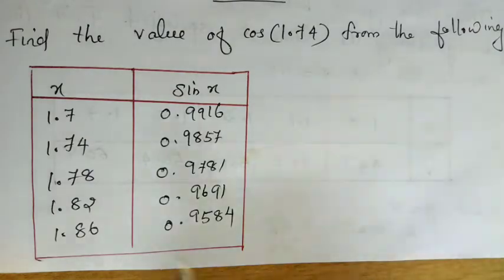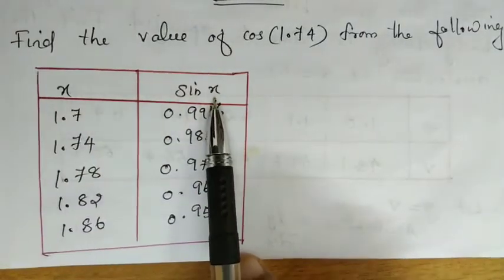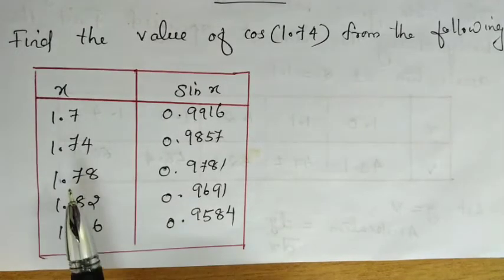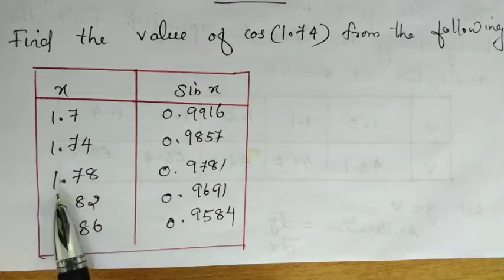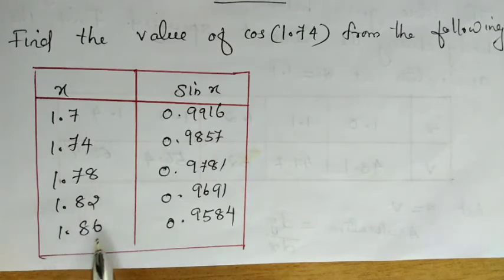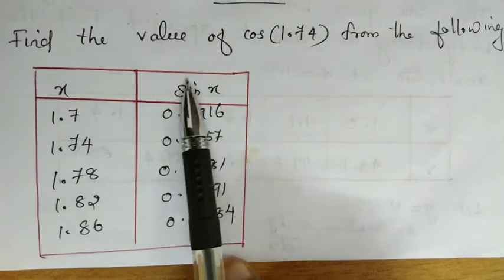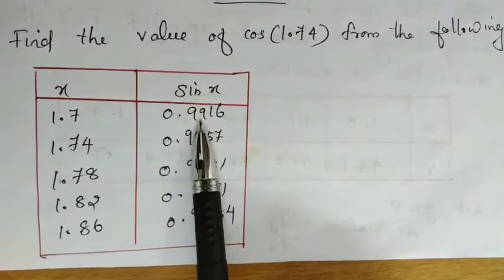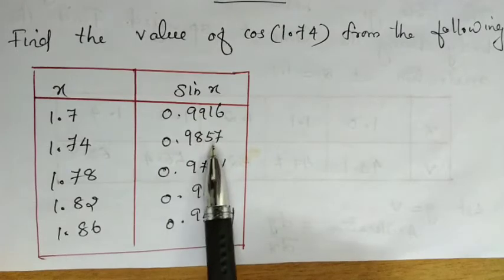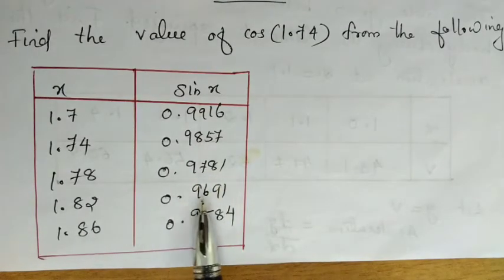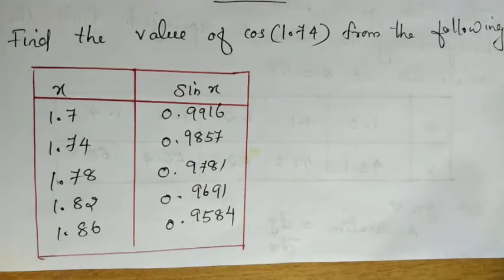A table is given with x and sin x. The x values are 1.70, 1.74, 1.78, 1.82, and 1.86. The corresponding y values (y = sin x) are 0.9916, 0.9857, 0.9781, 0.9691, and 0.9584.